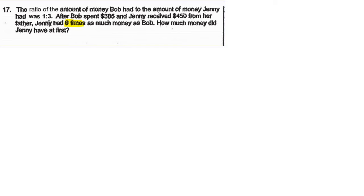The ratio of the amount of money Bob had to the amount of money Jenny had. So after Bob spent $385 and Jenny received $450 from her father, then Jenny has eight times as much as Bob.